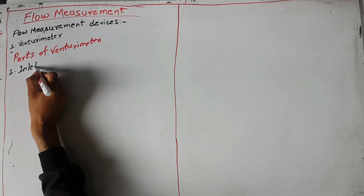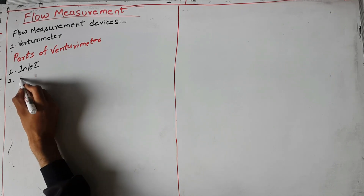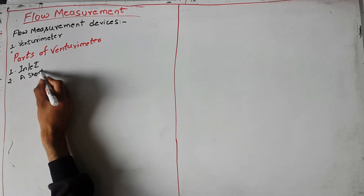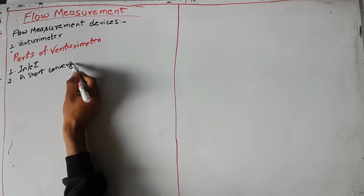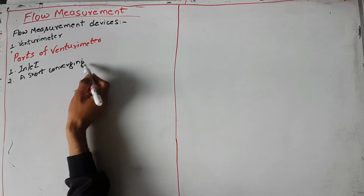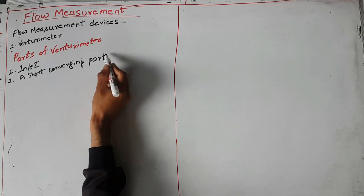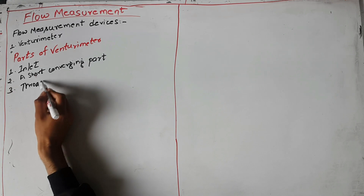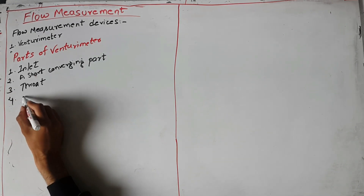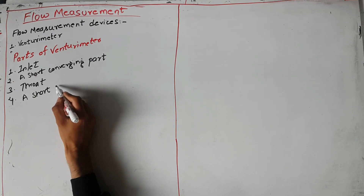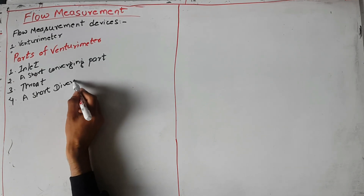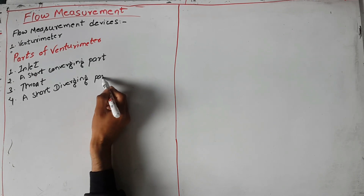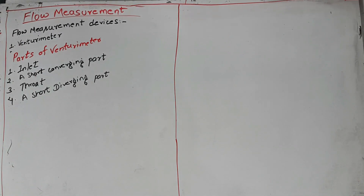The parts of venturimeter are: 1. Inlet, 2. A short converging part, 3. Throat, 4. A short diverging part. These are the four parts of venturimeter.